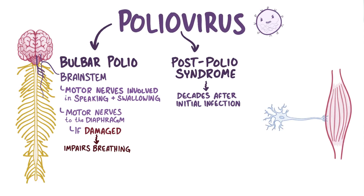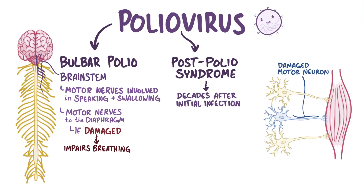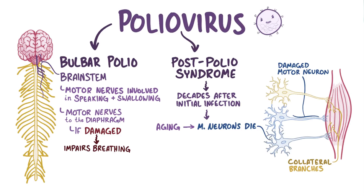To understand post-polio syndrome, it's important to know that when polio damages some motor neurons, other nearby healthy motor neurons form collateral branches to innervate the muscles that have lost their innervation. Over time, the natural process of aging causes motor neurons to die. So when a motor neuron dies from the aging process, a person doesn't just lose function in the muscle cells that they were normally innervated by, but also in the other muscle cells that were innervated by collateral branches of that motor neuron.